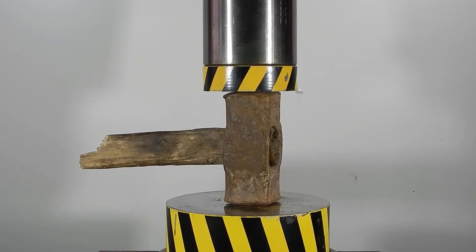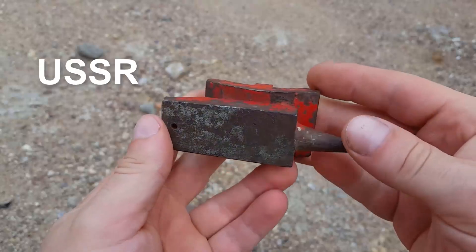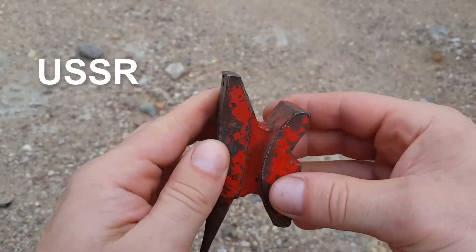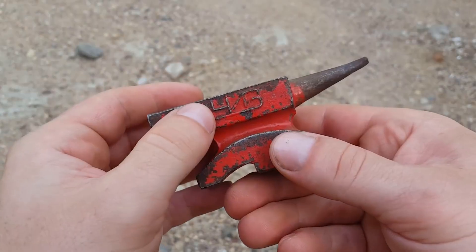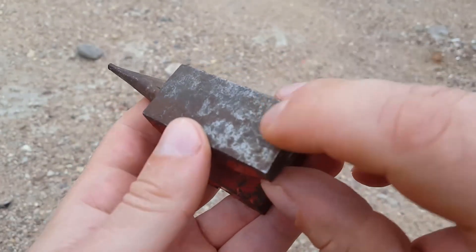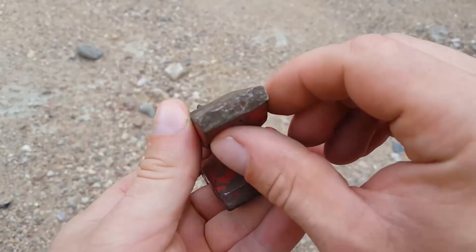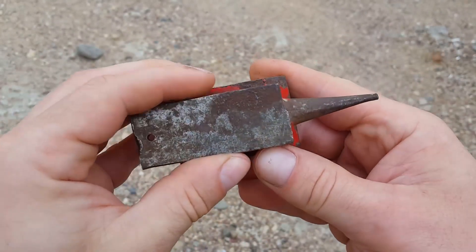Today, we will test the strength of two small anvils. One of them is Soviet. Its condition is satisfactory. By the way, this inscription, CTF, stands for Chelyabinsk Tool Factory. Therefore, this anvil has every chance to survive a 100-ton load. You can see that it was probably used instead of a hammer. Confirmation of this is this scratch.